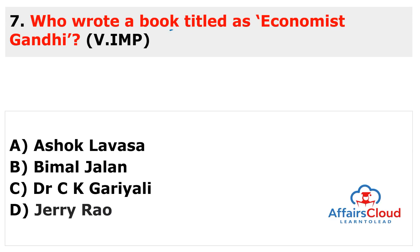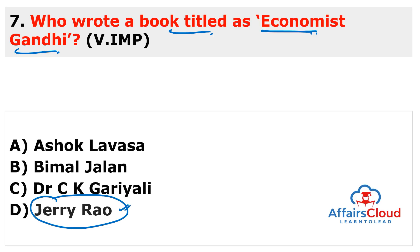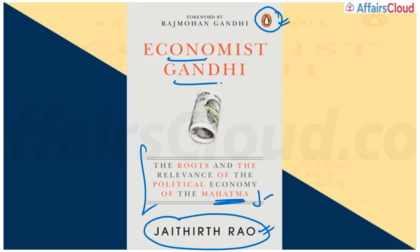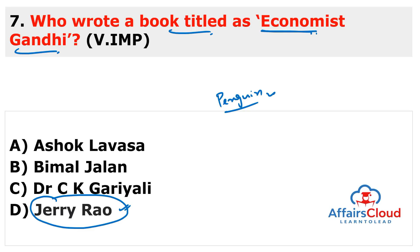Next question: Who wrote the book titled 'Economist Gandhi'? The full subtitle is 'The Roots and the Relevance of the Political Economy of the Mahatma'. This book is written by former bureaucrat and entrepreneur Jerry Rao — original name Jayatirath Rao — and is published by Penguin Random House. The book provides insights into a hidden facet of Gandhiji's personality, including his thoughts on economics and capitalism.